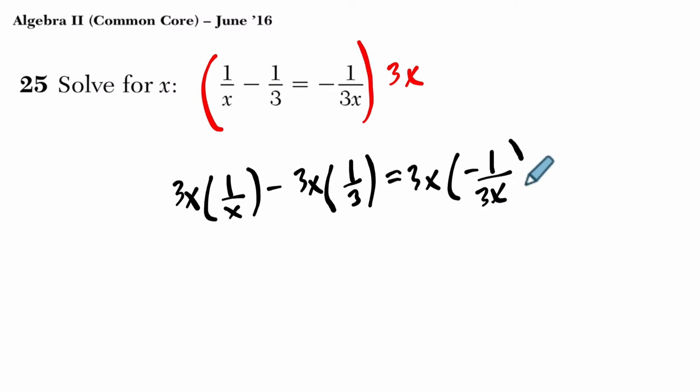Now I don't usually write this step out, but it helps us see that multiplying by the least common denominator will cancel out so much for us, right? x divided by x, 3 divided by 3, and 3x over 3x.